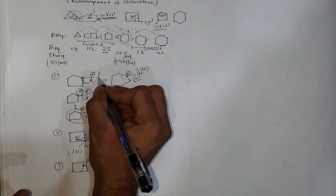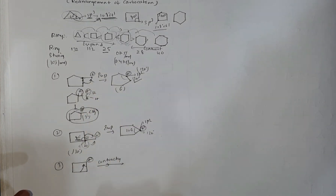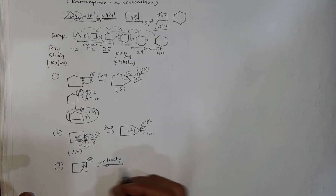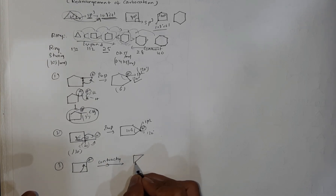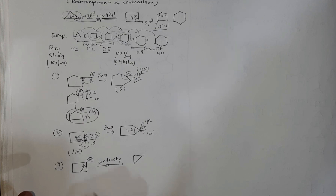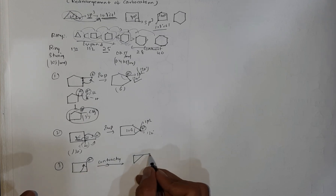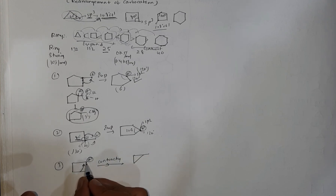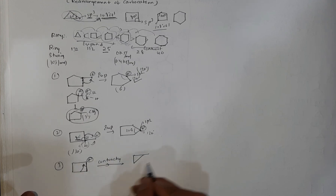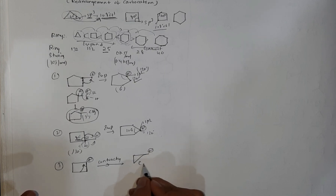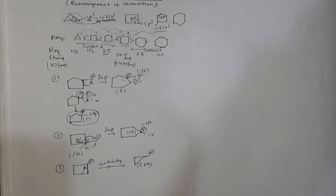When the bond shifts here, the ring contracts from four carbons to three carbons — the entire bond shifts and the positive charge moves out of the ring. The resulting structure is a cyclopropylmethyl carbocation (CPM), which is a more stable form due to resonance stabilization of the cyclopropyl ring with the adjacent carbocation.